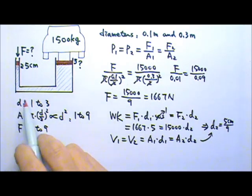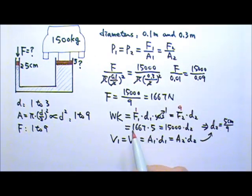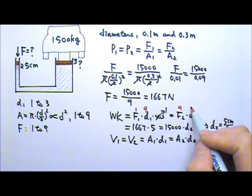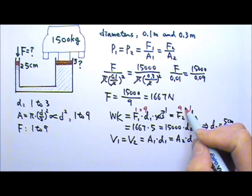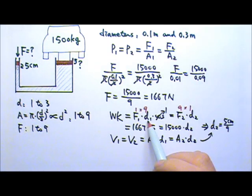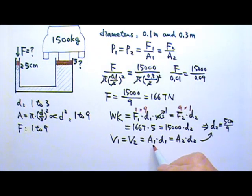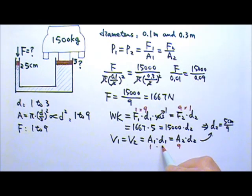We can also use the ratio to solve this problem. The force ratio is 1 to 9, which means the displacement ratio has to be 9 to 1, because 1 times 9 equals 9 times 1. So if we save force — with the applied force being one ninth of the resistance force — we have to travel 9 times the distance, meaning the car only goes up one ninth of 5 centimeters. Since the cross-sectional area ratio is 1 to 9, the displacement ratio must be 9 to 1 to keep the volumes equal.